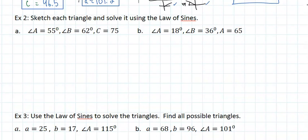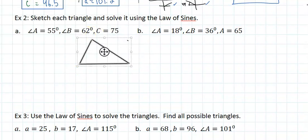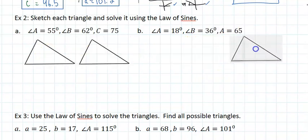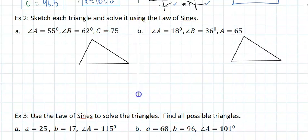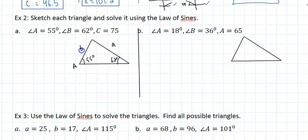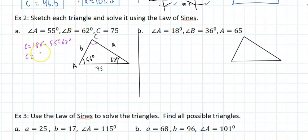Instead of giving us the triangle, they're asking us to draw it. You can draw a rough sketch — it doesn't have to be to scale. The important thing is to label the sides accurately. Put angle A at 55 degrees with side A opposite it, angle B at 62 degrees with side B opposite, and side C equals 75 with angle C opposite. Automatically, C is 180 minus 55 minus 62, which equals 63 degrees.